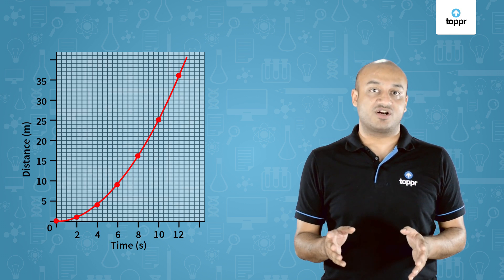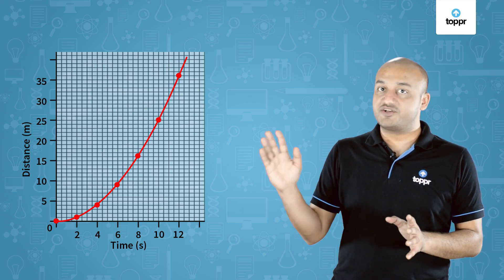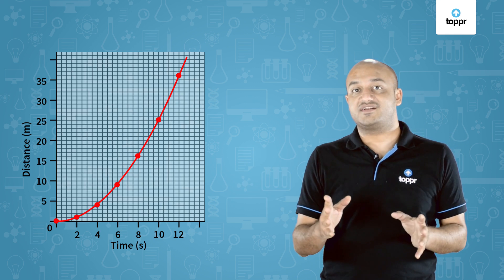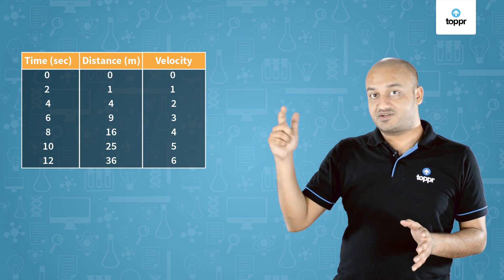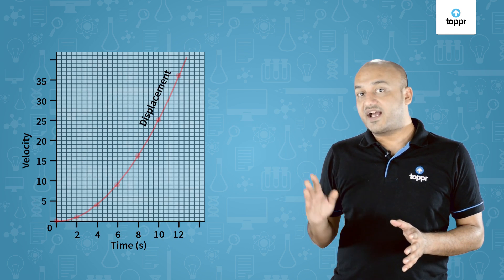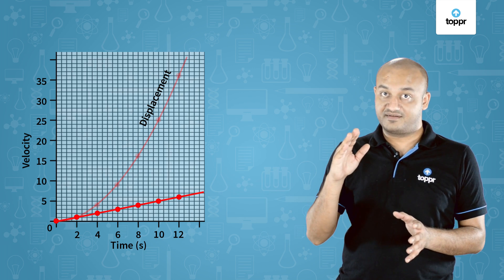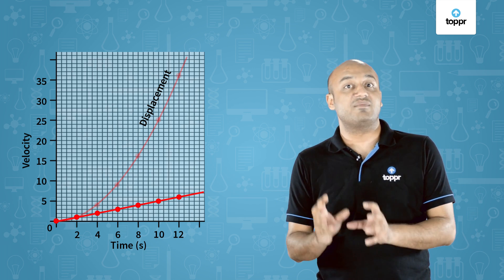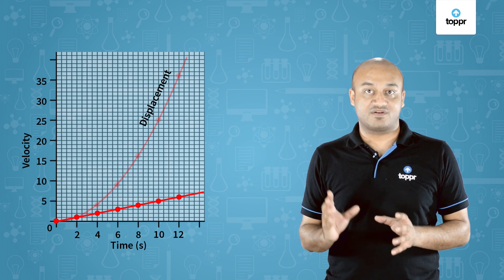That was all about distance time graphs. Now let's talk about velocity time graphs. We just saw that in the distance time graph for non-uniform motion, it turned out to be a curved line. Now we're going to draw the same numbers on a velocity time graph by adding a third column with velocity data points. Plotting velocity on the y-axis and time on the x-axis, you can see that the velocity time graph — even though it was non-uniform motion — turns out to be a straight line. This means that in uniformly accelerated motion, the velocity time graph is a straight line.